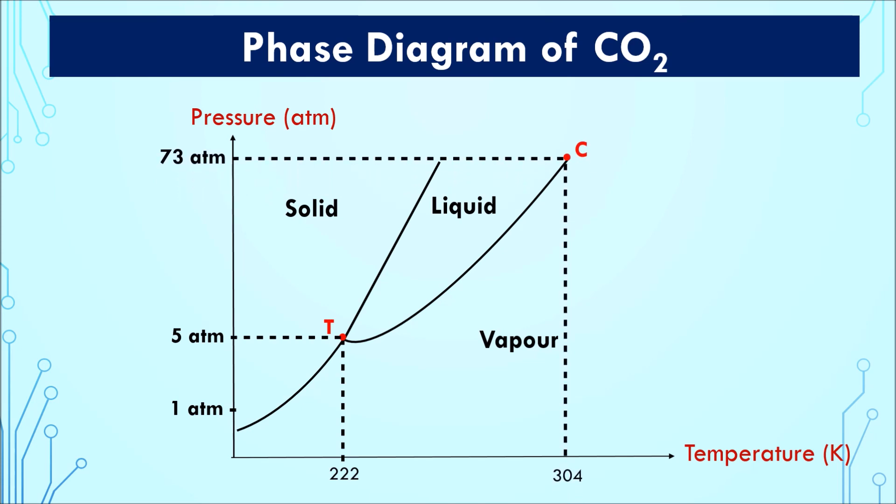There you go, a correctly sketched and labeled phase diagram of carbon dioxide. Curve AT is the sublimation or deposition curve. Here, solid carbon dioxide is in equilibrium with vapour carbon dioxide.